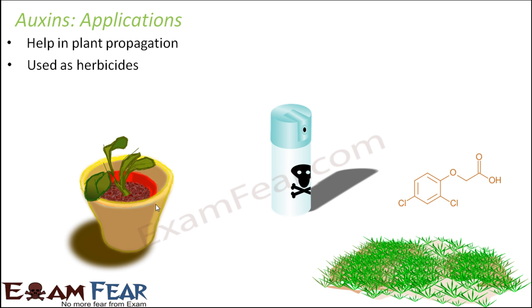Auxins are also used as herbicides — medicines which can kill unwanted plants like weeds. One example of an auxin used as a herbicide is 2,4-D, that is 2,4-dichlorophenoxyacetic acid. It can kill dicot weeds, and that is how we can prepare lawns free of weeds, because weeds are unwanted plants that take away the nutrition of desired plants and can harm the crops we need.